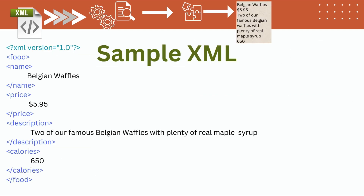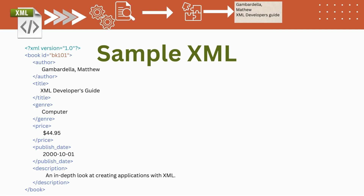Sample XML: our first sample XML is for food — we will be referring to it as food XML in this video. Our next sample XML is for book — we will be referring to it as book XML.